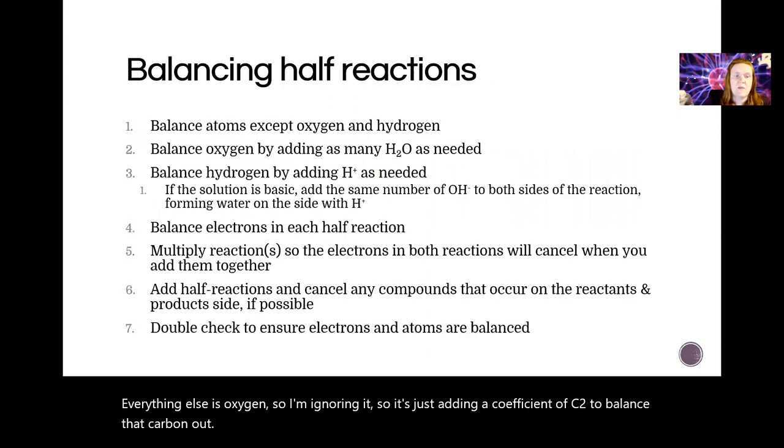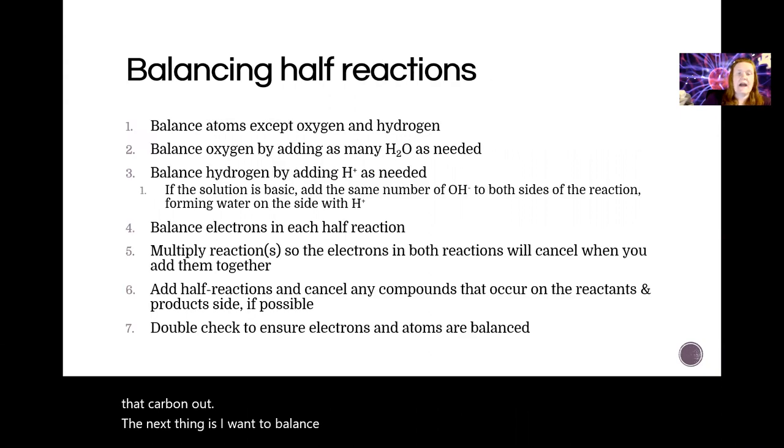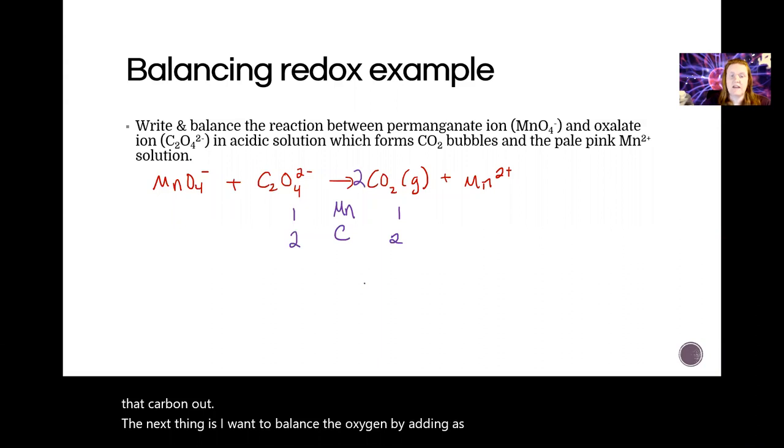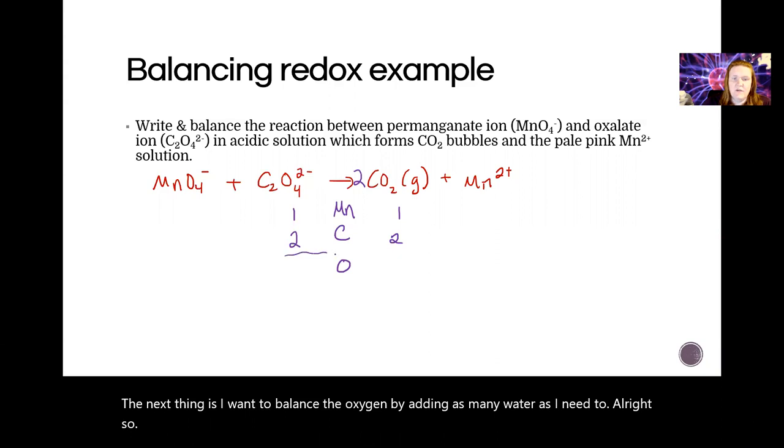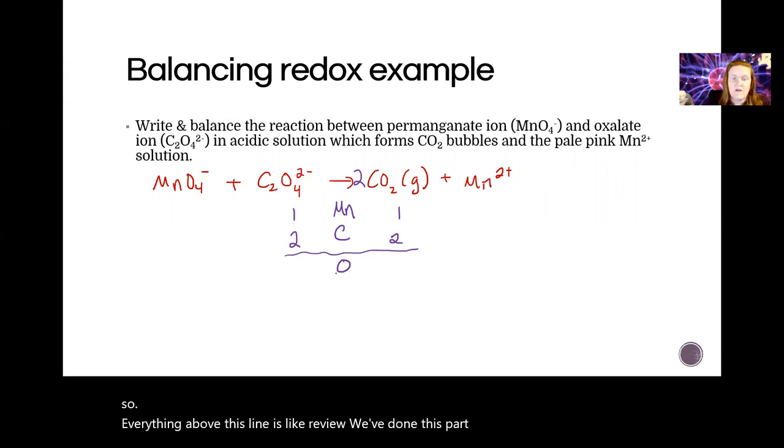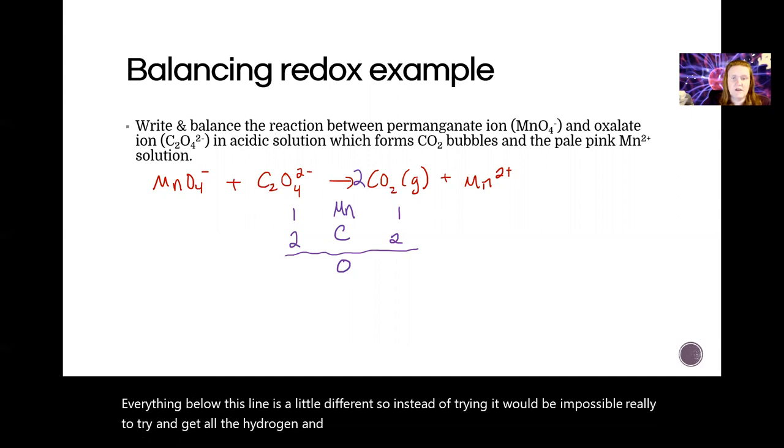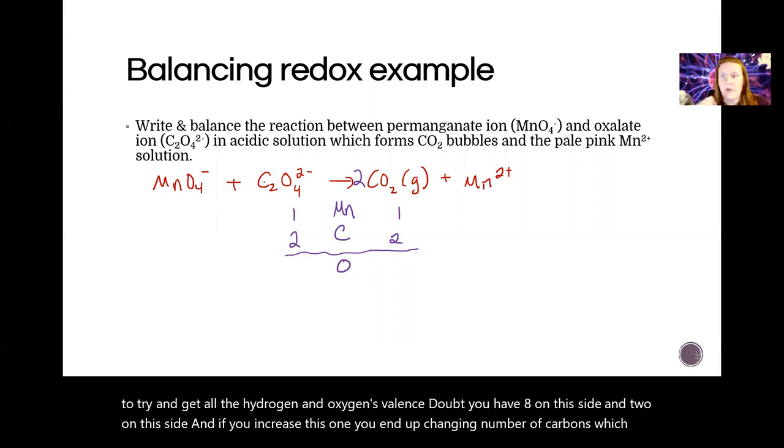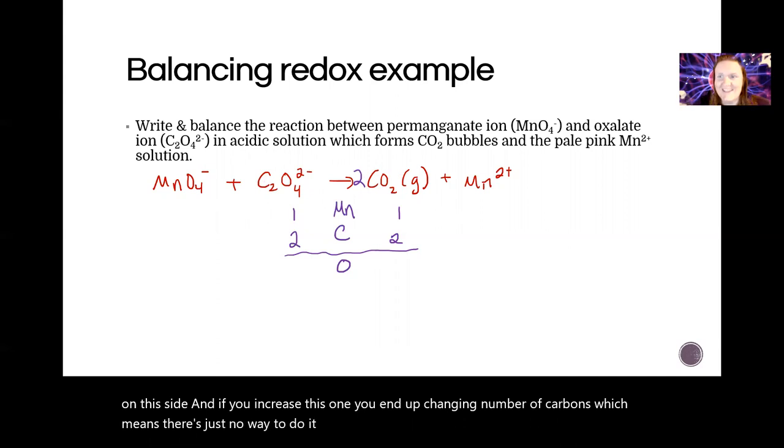The next thing is I want to balance the oxygen by adding as many water as I need to. All right, so everything above this line is like review. We've done this part before. Everything below this line is a little different. So instead of trying—it would be impossible, really—to try and get all the hydrogens and oxygens balanced out. You have eight on this side and two on this side, and if you increase this one, you end up changing number of carbons, which means there's just no way to do it. Don't try. It's madness.